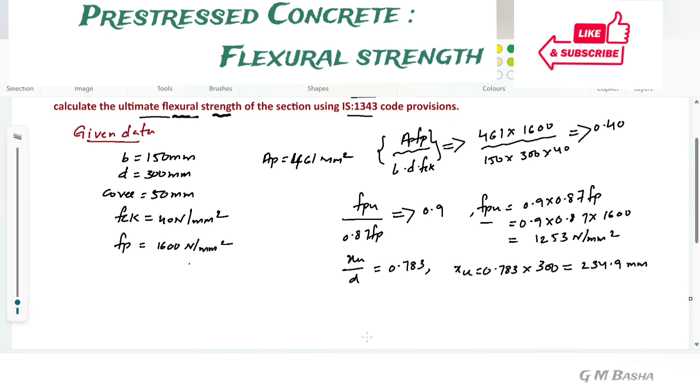For that, please remember this formula: Mu equal to fpu Ap (d minus 0.42 xu). Please remember this formula and substitute the values. fpu is 1253, Ap is 461, d is 300, minus 0.42 xu value is 234.9. If you simplify, how much you will get exactly? After simplifying, you will get around this value. You please check the value once again and take the correct value. This is the obtained value. This is how you can solve this example.